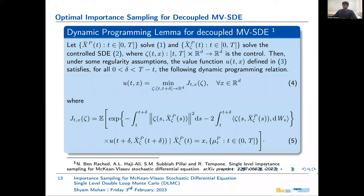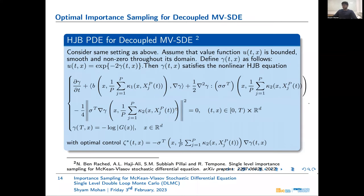Once we have proven this dynamic programming lemma, the solution to the minimization problem is given with the help of the non-linear Hamilton-Jacobi-Bellman PDE for the decoupled McKean-Vlasov SDE. We solve for a transformed variable gamma, which is simply related to U, our value function. The non-linearity comes from a specific term in this PDE, and after solving it we obtain the optimal control as a function of gamma. The proof of this theorem is given in our first work.